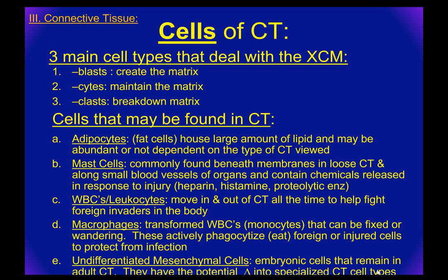Let's continue with connective tissue. Within connective tissue, you have three cell types that deal with the extracellular matrix. They are responsible for creating, maintaining, and when needed, breaking down that extracellular matrix. Because we have so many types of connective tissue, there's usually a prefix associated with the cell that corresponds to the specific tissue we're talking about.